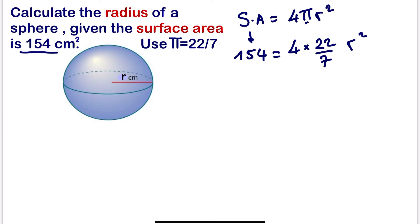So if we continue, we are going to have 154. 4 times 22 will give us 88r² over 7.